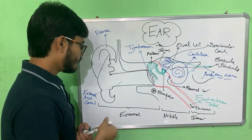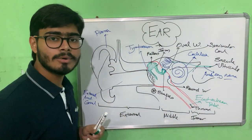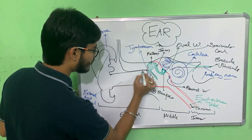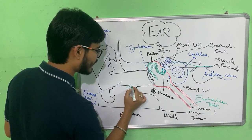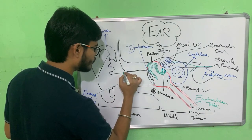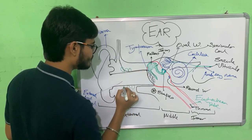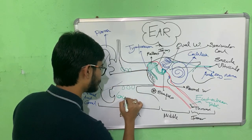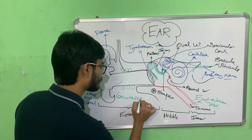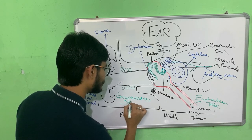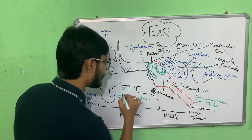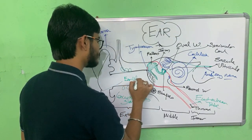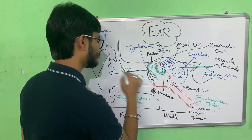Another important point: the external auditory canal contains some modified sebaceous glands called the ceruminous glands. These glands secrete cerumen, or earwax.